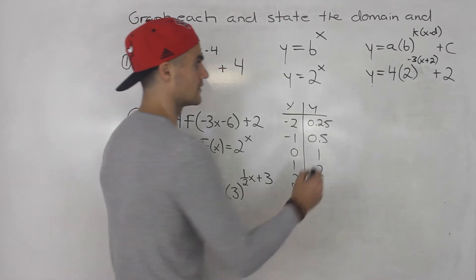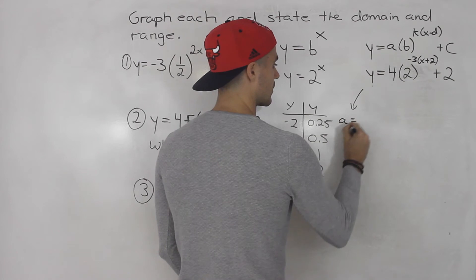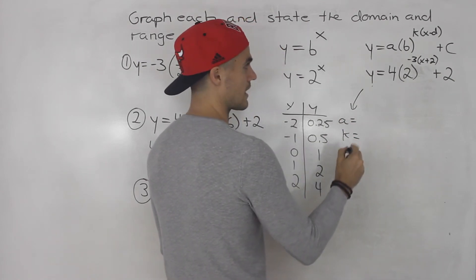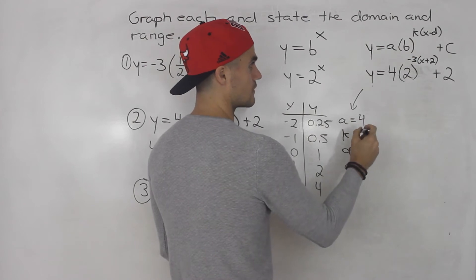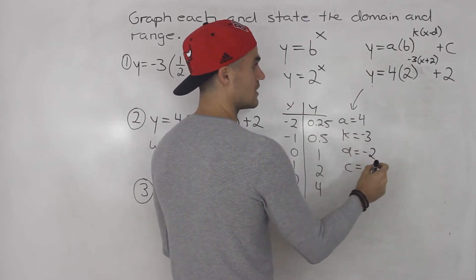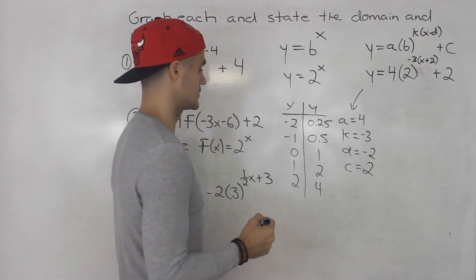Then from here really easy, what are the transformation values. So the a value is 4, k value is negative 3, the d value is negative 2, and then the c value is positive 2.